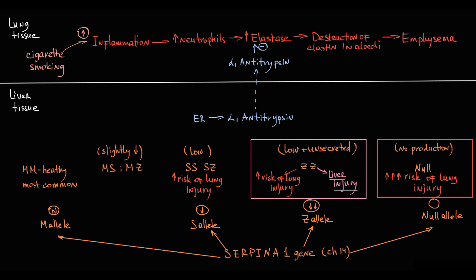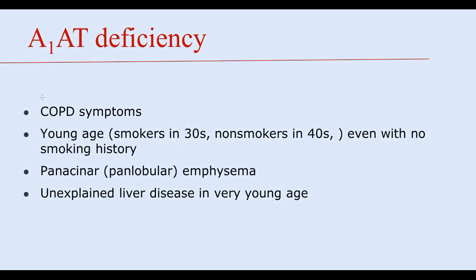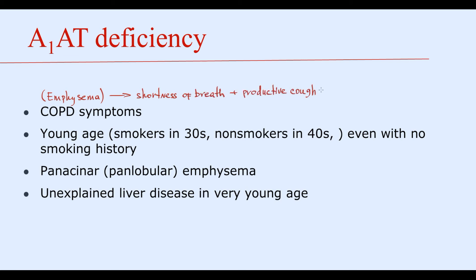There are a few characteristic features of alpha-1-antitrypsin deficiency. Because it causes emphysema, a form of chronic obstructive pulmonary disease, patients usually present with typical COPD symptoms such as chronic shortness of breath and productive cough. Importantly, they have these symptoms at a relatively young age — smokers present in their 30s, whereas non-smokers present in their 40s.